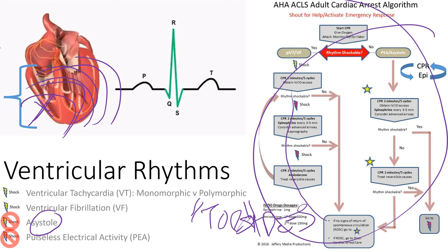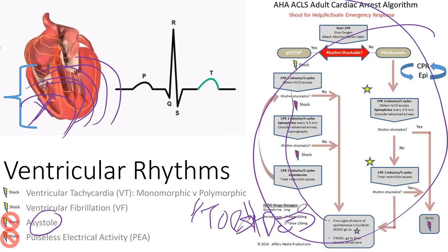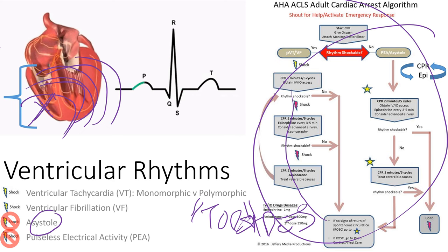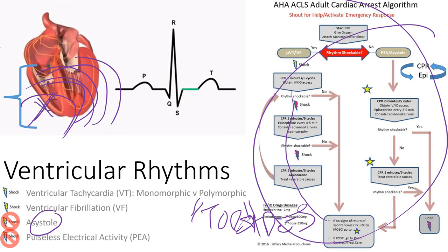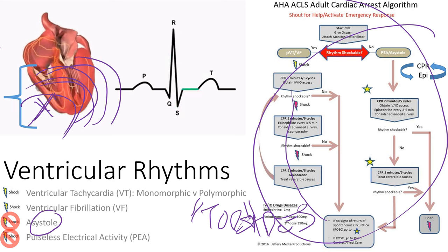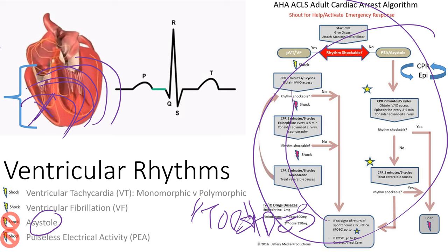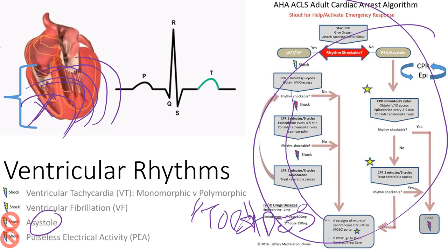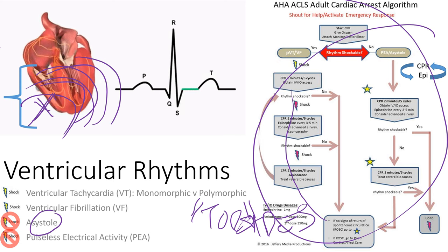An important thing about these rhythms is that the causes are all the same — we call them the H's and T's. H's and T's are the causes for all lethal rhythms, and the reason that's important is because H's and T's are reversible — we can fix them right then and there to try to get the patient out of these rhythms. So H's and T's are the causes for all ventricular rhythms.